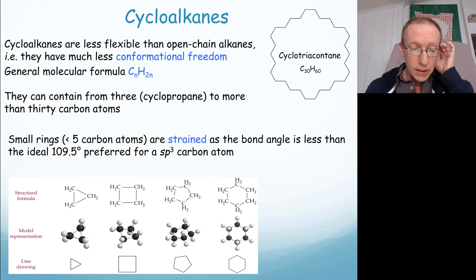Small rings, five carbon atoms or less, are quite strained because the bond angles around that system are less than the ideal 109.5 degrees that we would like for a sp3 hybridized carbon atom. So cyclopropane is very strained, cyclobutane is also quite strained. Cyclopentane is not too bad, whereas cyclohexane, the six-carbon system, is actually pretty good.